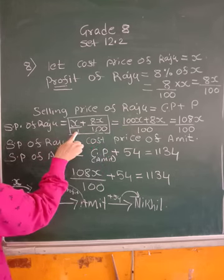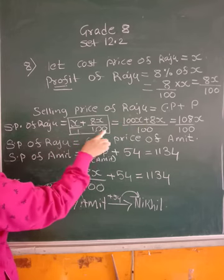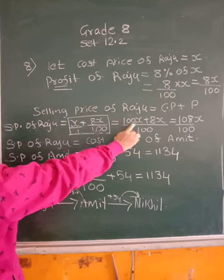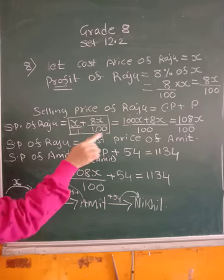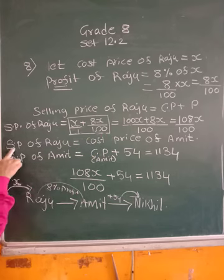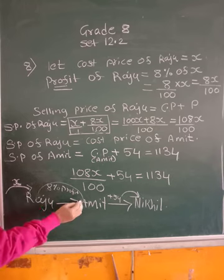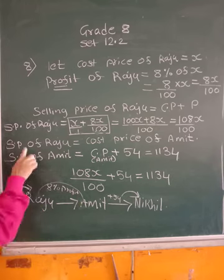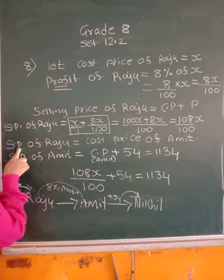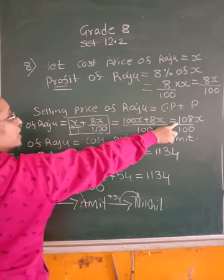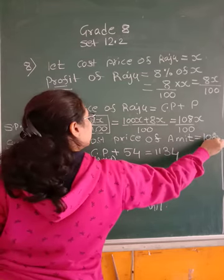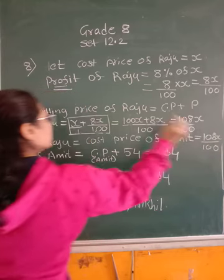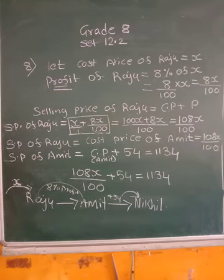100 into X is 100X, 1 into 8X is 8X, divided by 1 into 100 is 100. So 100 upon 100X plus 8X, these are like terms. It becomes 108X upon 100. So 108X upon 100 is nothing but selling price of Raju. But selling price of Raju is same as cost price of Amit. So we got cost price of Amit is equal to 108X upon 100. This is selling price of Raju which is equal to cost price of Amit.